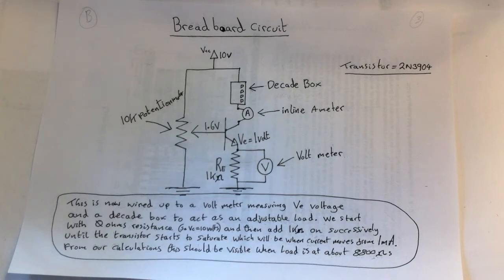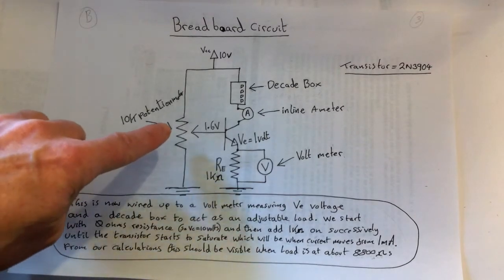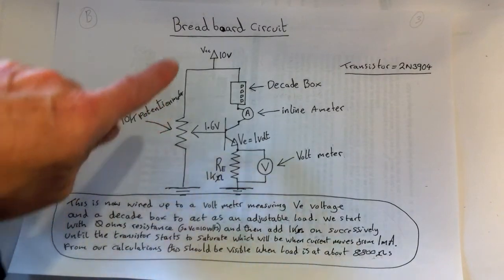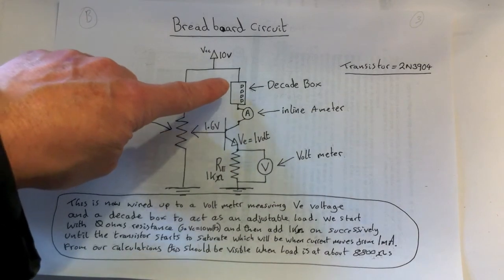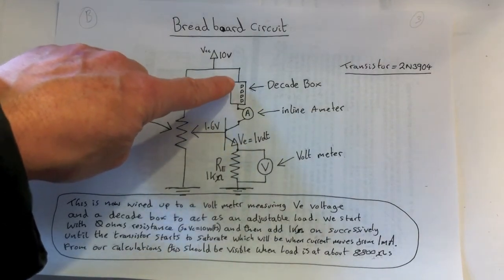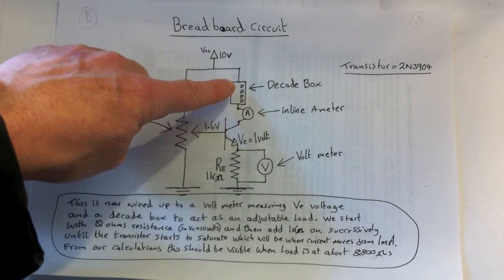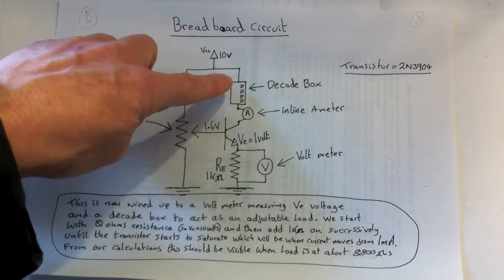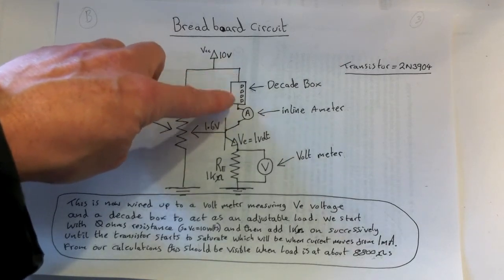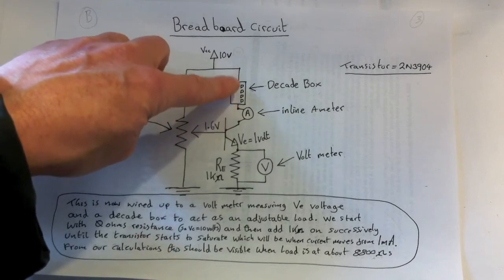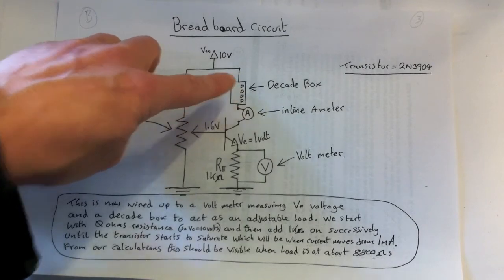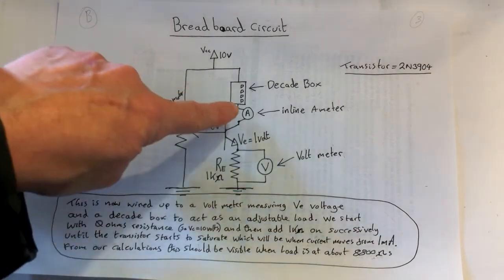Here's what we're going to build. It's just three components including the load which is the decade box. So we've got a 10k potentiometer, we've got a decade box which we can change from 0 up to 1 meg, so we can jump through ranges of 1k all the way up to 8k if we want to.